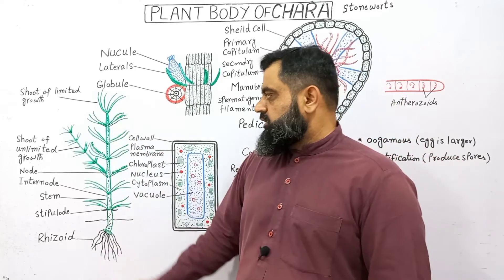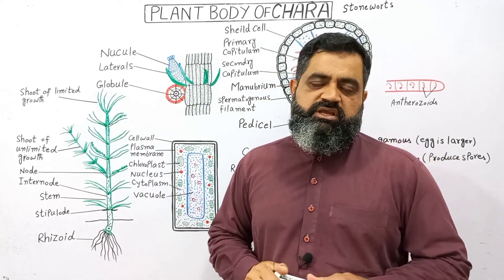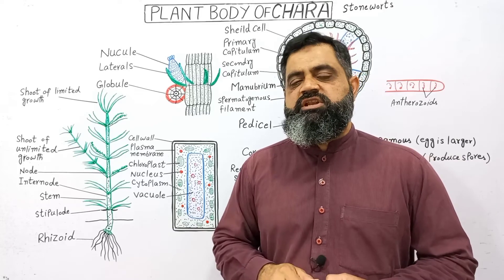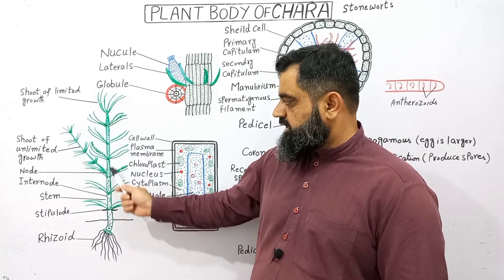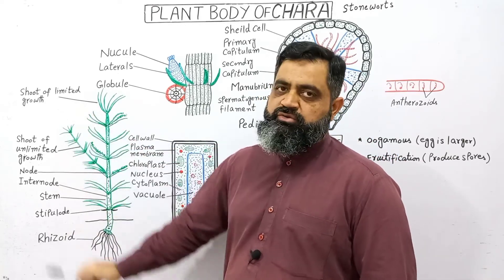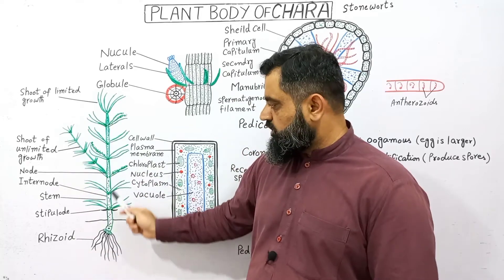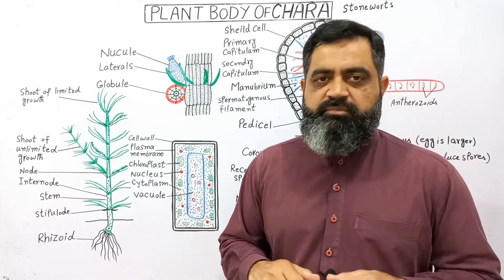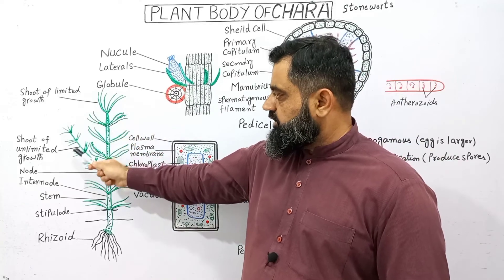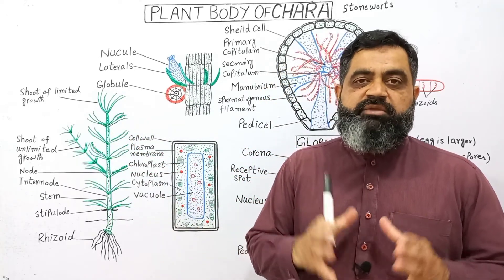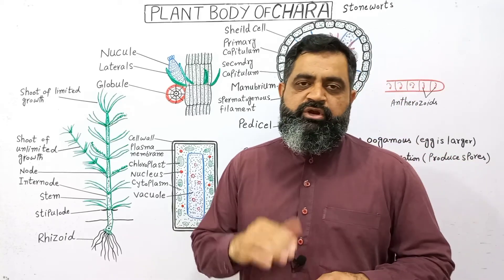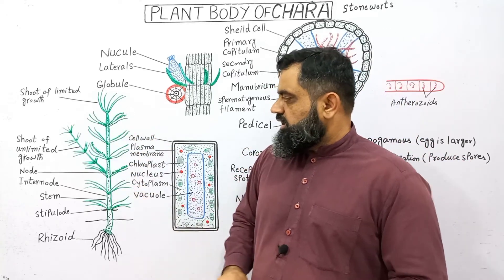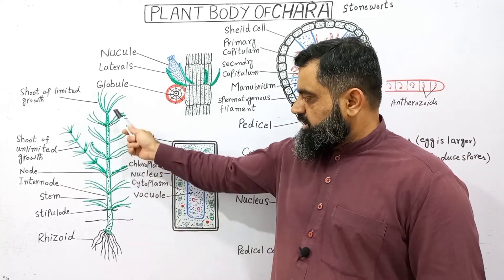This stem produces two types of branches. The main branch is a shoot of unlimited growth, meaning it can increase in length unlimitedly. The other type of branches are shoots of limited growth — after growing to a certain length, they stop their growth. So the main axis represents unlimited growth while the side branches represent limited growth.